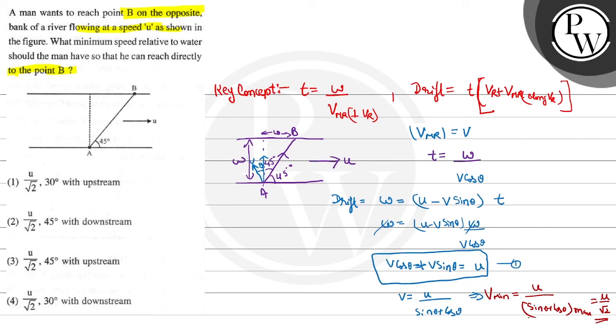When the value is 45 degrees, it is matching with U by root 2, 45 degrees with the upstream.